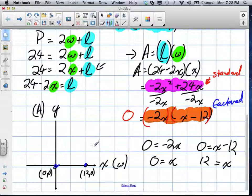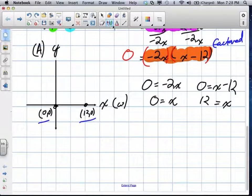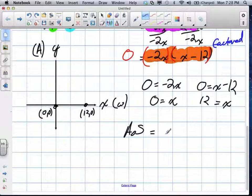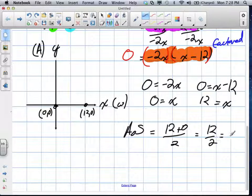And then, from there, we could even find what the max would be. Do you have an idea of how we'd find the max with this information? Like when you know the zeros? Yeah. You add them together and then divide by 2. That's exactly right. That's called the axis of symmetry. So we add them together, which is 12 plus 0 is 12. 12 plus 0 is 12, divided by 2. It's going to give us 12 over 2, which is what? 6.